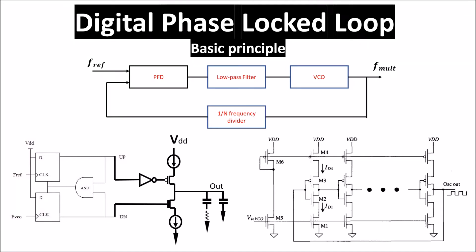A phase-locked loop is a device which generates a clock and synchronizes it with an input signal. The input signal can be data or another clock. The best known application of PLLs is clock recovery in communication. When a signal of unknown frequency is being received, a synchronized clock is required to time circuitry which is processing the incoming signal.